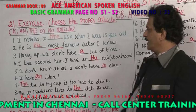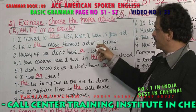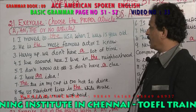Hurry up, we don't have a lot of time. You have to use 'a.' Not 'the lot of time' or 'an lot of time' — it's 'a lot of time.' I live around here. I live in the neighborhood — you use 'the neighborhood.'